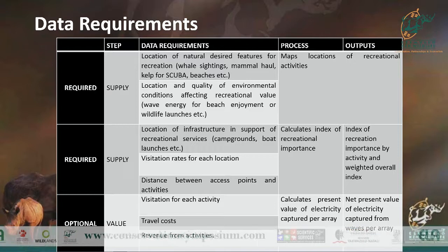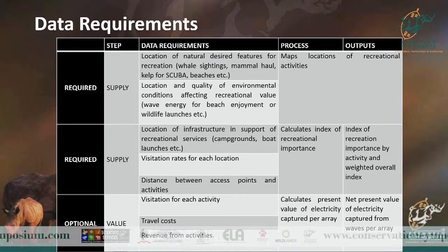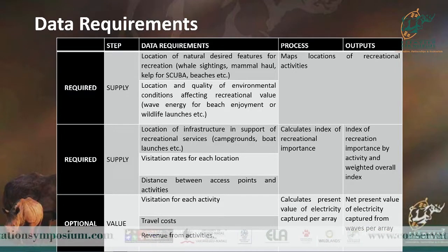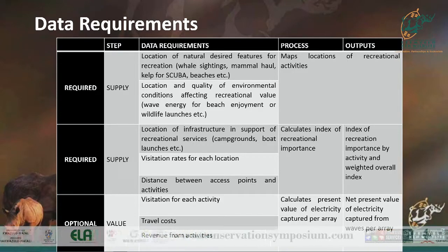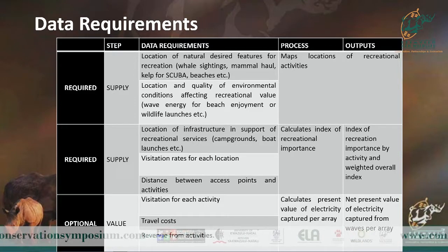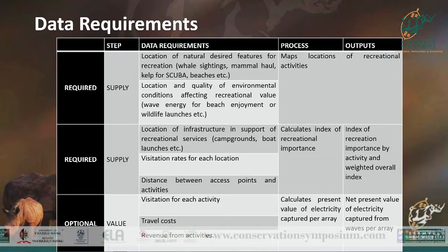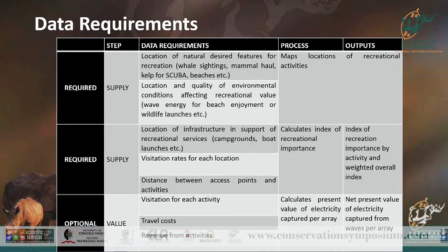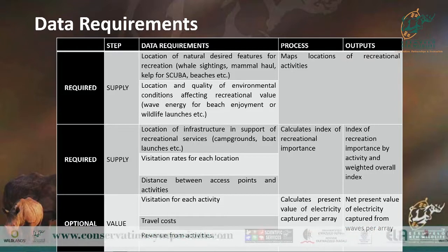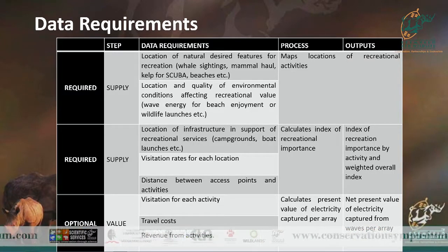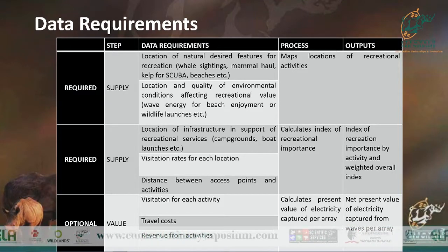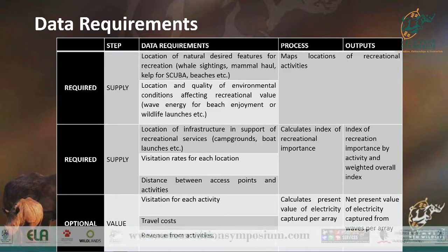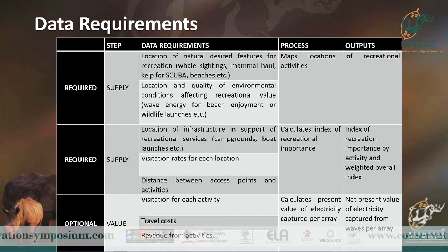You also need data such as infrastructure, roads, and accessibility, because accessibility to an area can affect visitation. Visitation rates are also needed. The Flickr proxy comes in when you don't have empirical data. If you do have the data, you input it directly. For value, the model looks at travel costs and revenue from activities — numbers accessible with a bit more probing. The outputs are maps showing where and how much each activity is worth.